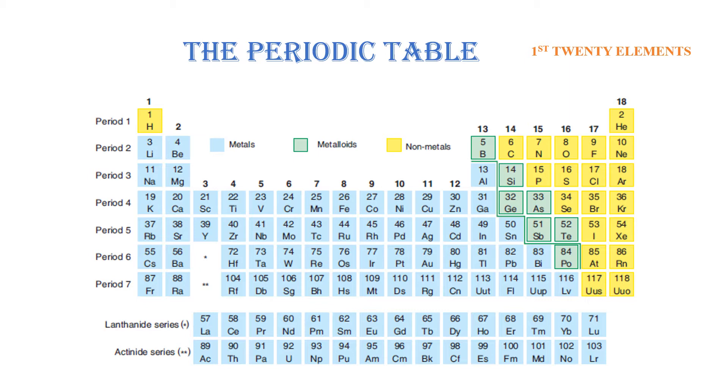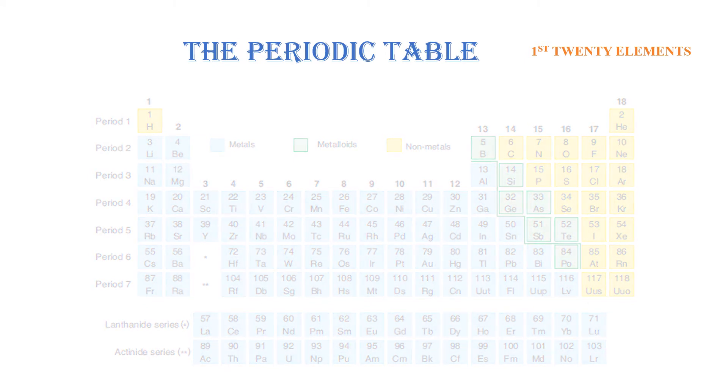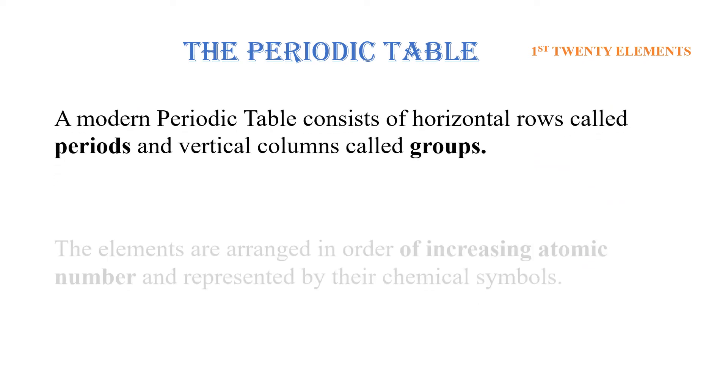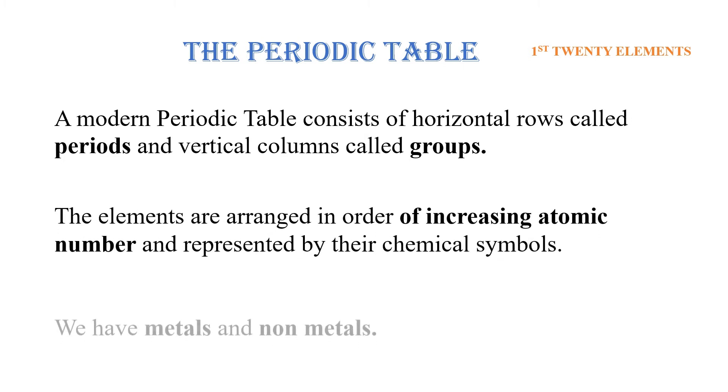So the periodic table generally looks like this. However, we shall summarize it in three points. One, in the periodic table, we have horizontal rows that we call periods and vertical columns that we call groups.